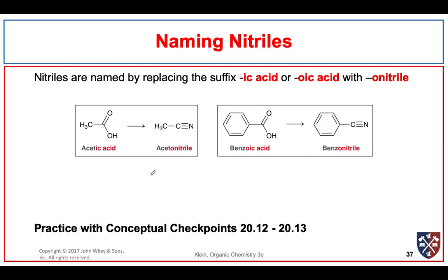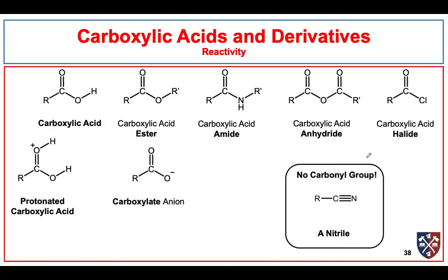Nitriles are named by replacing the suffix 'ic acid' or 'oic acid' with 'onitrile.' So acetic acid becomes acetonitrile, and benzoic acid becomes benzonitrile.